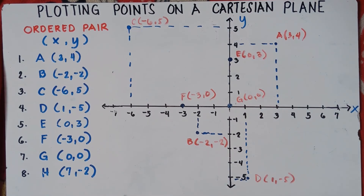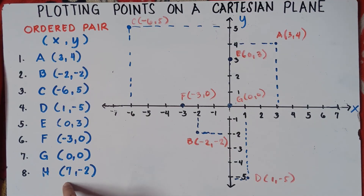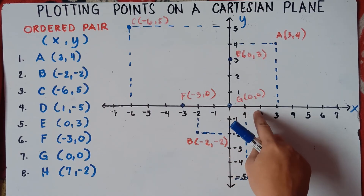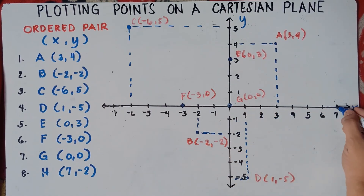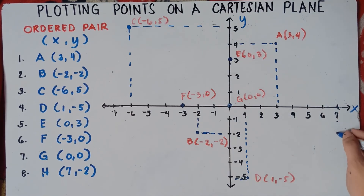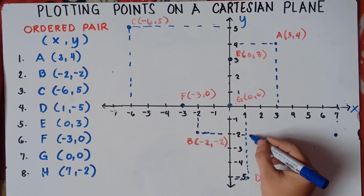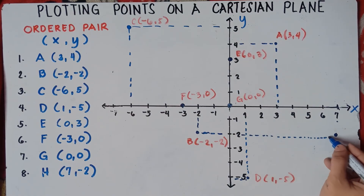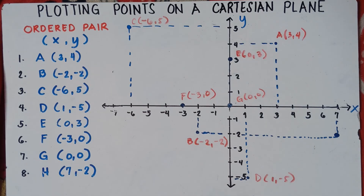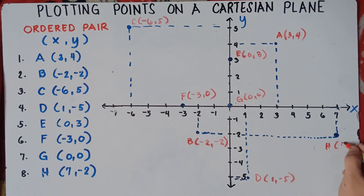For point H, we have (7, -2). X is positive 7, so move from the center to the right 7 units — 1, 2, 3, 4, 5, 6, 7. Then y is negative 2, so move 2 units downward — 1, 2. Make broken lines to guide you. You can use different pen colors — blue, red, and black — so the markings aren't confusing. Label the point: H is (7, -2).